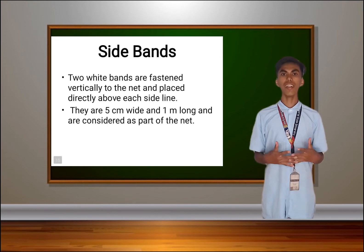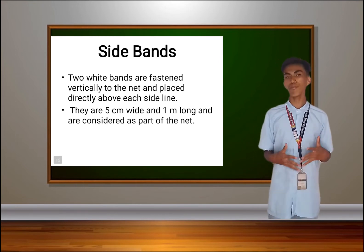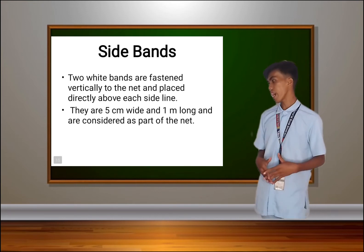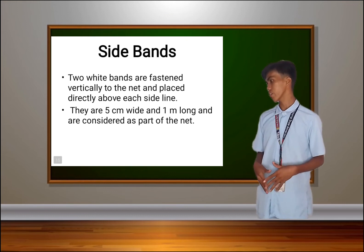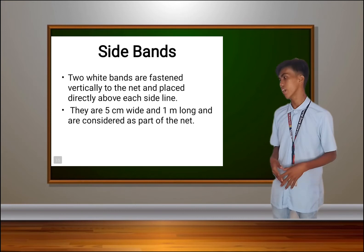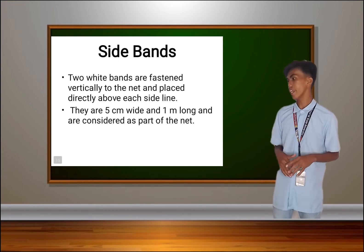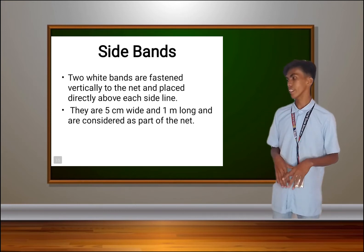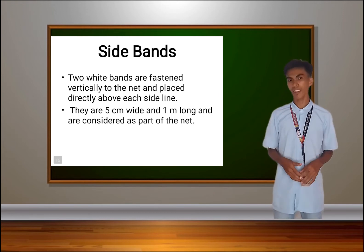Next, under the net and post is the side bands. Two white bands are fastened vertically to the net and placed directly above each side line.